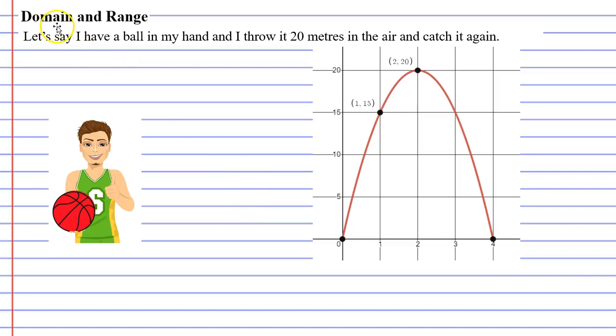In this video we're going to talk about domain and range. This can be quite a challenging concept for people to grasp. To help you understand, I'm going to show you a practical example. So let's say a person has a ball in their hand and they throw it 20 meters in the air and catch it again.